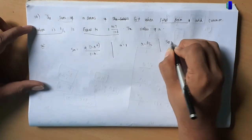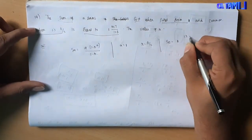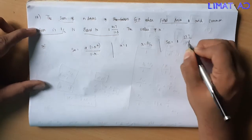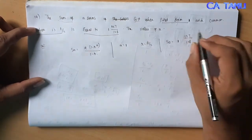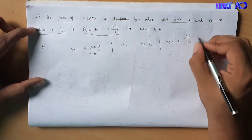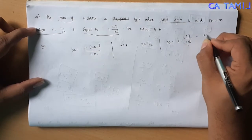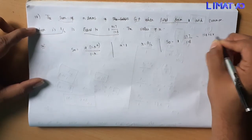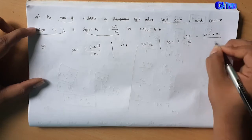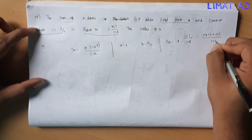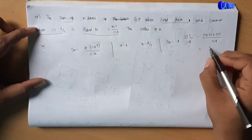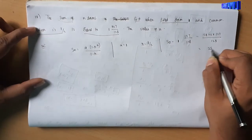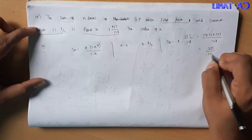That means Sn equals 1 into 127 divided by 128. We convert the mixed fraction: 128 plus 1 into 127, so we get 128 plus 127, which gives us 255 divided by 128.